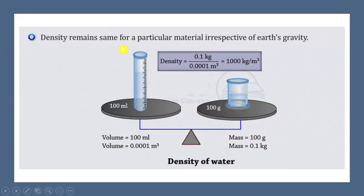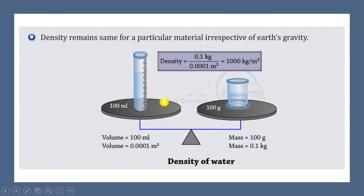The density remains constant for a particular material irrespective of Earth's gravity. For example, if the volume of a fluid is 100 ml and the mass is 100 grams, then density equals mass divided by volume: 0.1 kg divided by 0.001 meter cube gives 1000 kg per meter cube, which is the density of water. This value remains the same irrespective of Earth's gravity.